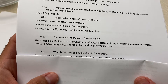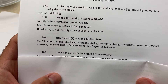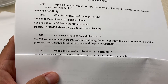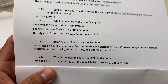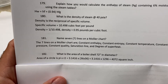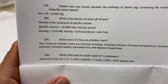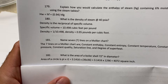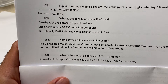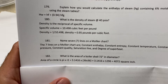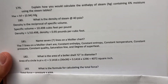What is the area of a boiler shell 72 inches in diameter? The area of a circle is pi times radius squared. Pi is 3.1416, and the radius is 36 inches, so 3.1416 times 36 times 36 gives that specific boiler an area of 4,072 square inches.